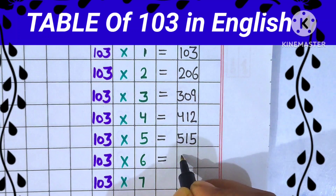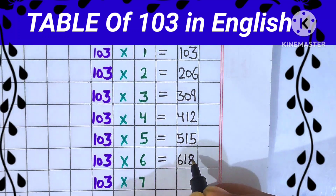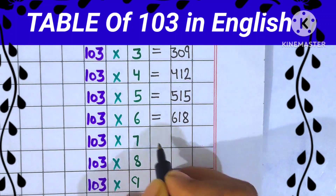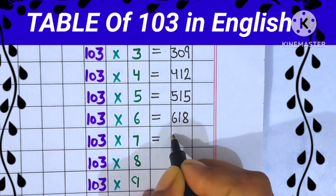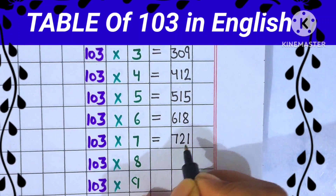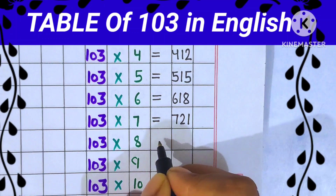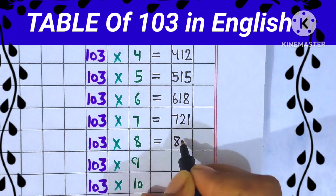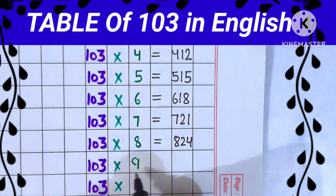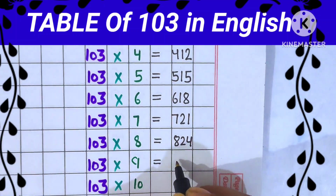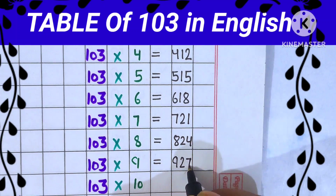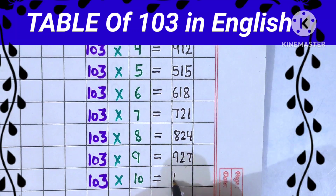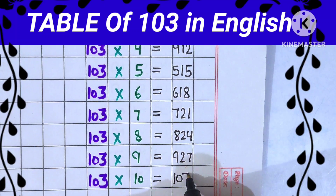103 sixes are 618. 103 sevens are 721. 103 eights are 824. 103 nines are 927. 103 tens are 1030.